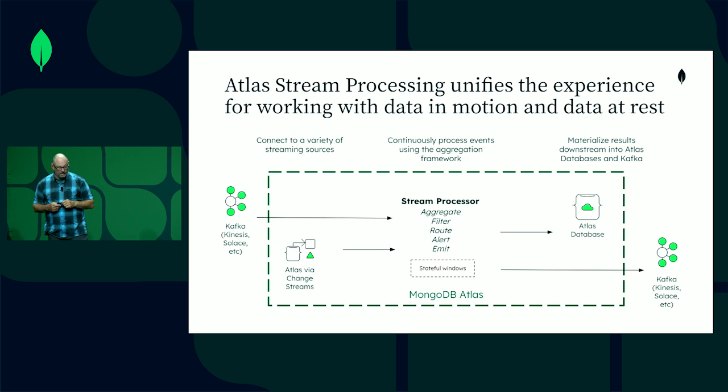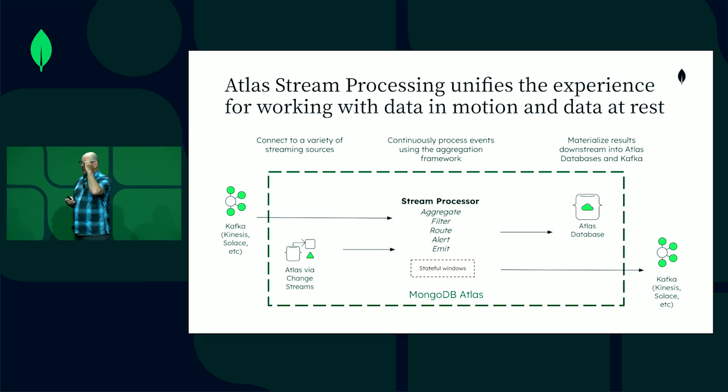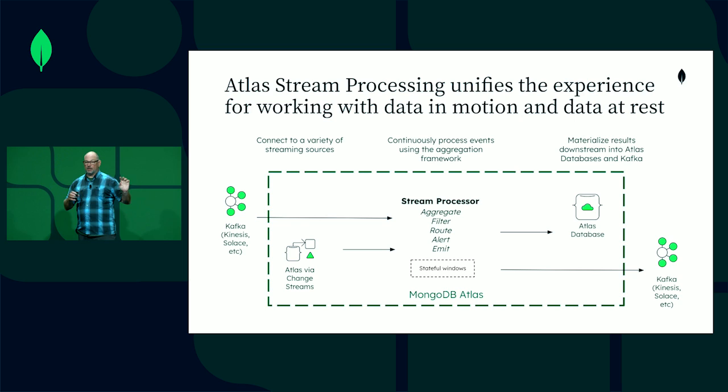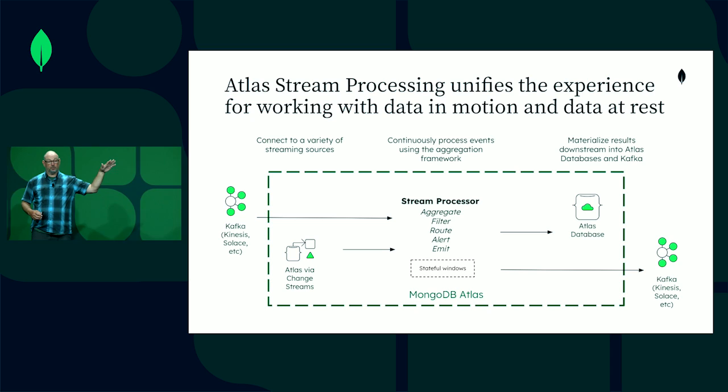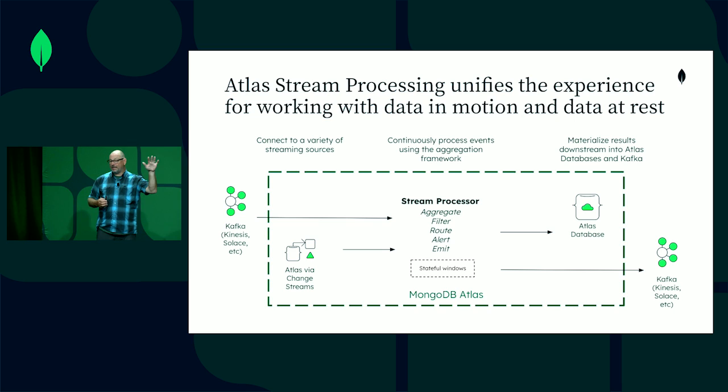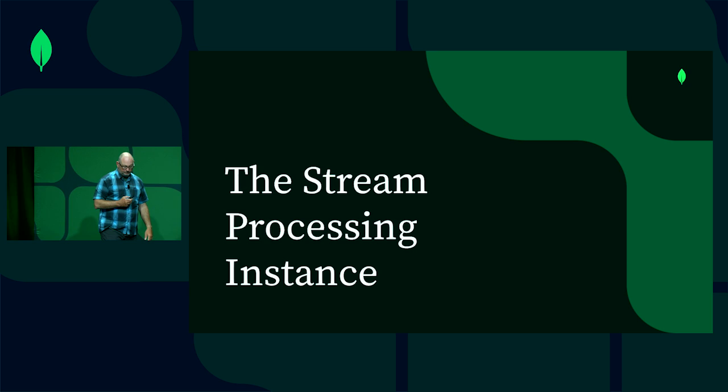Kafka is just the first messaging paradigm we're going to support. Down the line we'll support others like Kinesis, PubSub, and others. Note that Kafka is not hosted on Atlas — that's somebody else's Kafka, whether self-managed in your organization or Confluent Cloud or another cloud vendor. So we're connecting to where your data already is in Kafka, processing it, and landing it in Mongo — or reading it from Mongo, processing it, and landing it out to those Kafka topics.